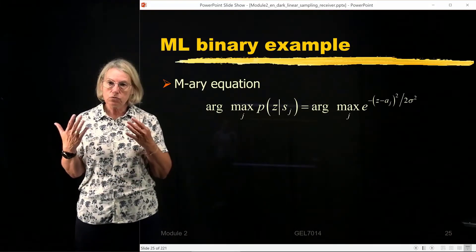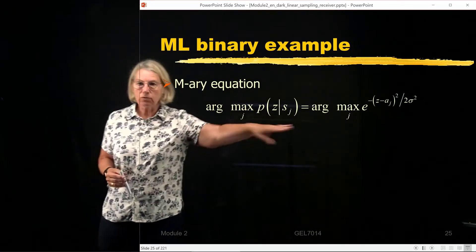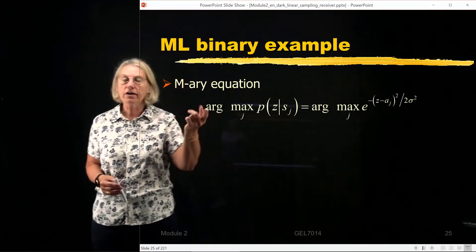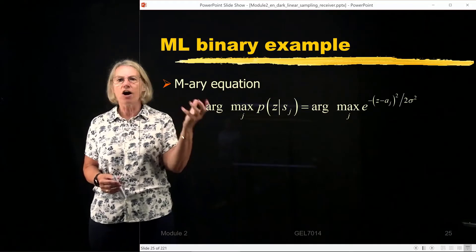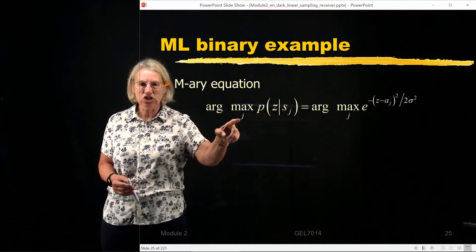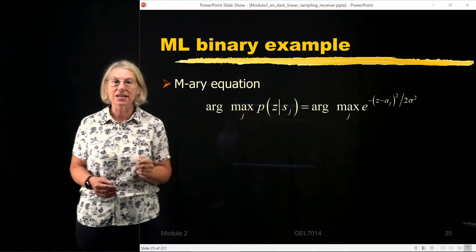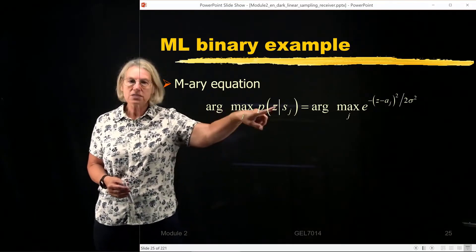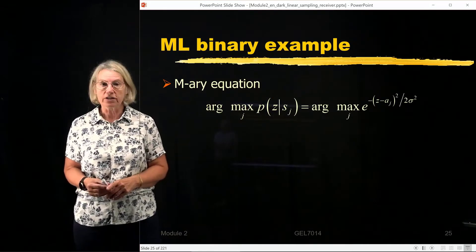So we go to our example, and this was the general equation that I am looking for. Here the word argument, ARG, means the argument, like which value of j actually did this maximization. So we're looking to find out which j maximizes the likelihood function.